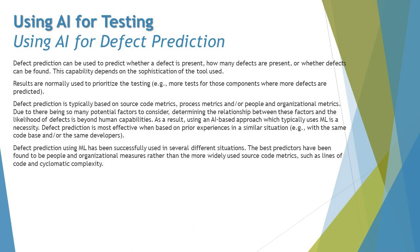Talking about predictions is really interesting. AI could help us detect defects or predict exactly where the defect-prone areas are, which would be very useful for better testing. Defect prediction can be used to predict whether a defect is present, how many defects are present, or whether defects can be found — and this capability depends on the sophistication of the tool used.